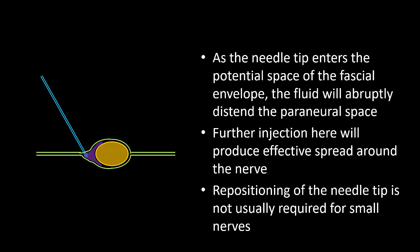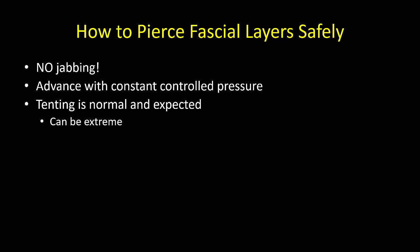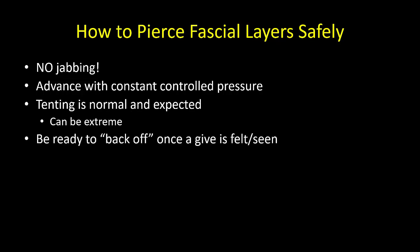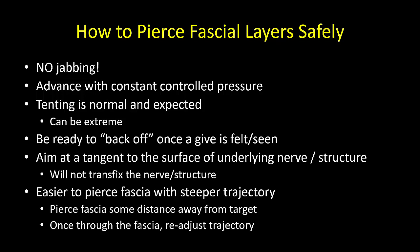Most of the time, repositioning is not needed. So to summarize: do not jab but advance the needle in a constant and controlled manner. Expect tenting of the tissues and distortion — the needle can look a lot deeper than it really is. Control is important because you have to be ready to back off and release the forward pressure on the needle once you feel or see the pop of the layer. Always aim at a tangent and slightly away from the nerve or underlying structure that you don't want to pierce. Remember that tough layers are easier to pierce with blunt needles if approached at a steeper angle. I will often deliberately steepen to pierce the fascia and then, once through it, readjust the needle to a flatter trajectory to approach the nerve.